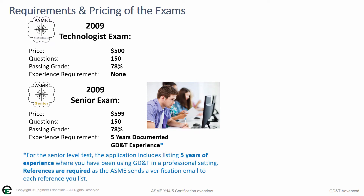For the senior level test, on the application you have to include 5 years of experience where you have been using GD&T in a professional setting. This means that references are required, as the ASME sends a verification email to every reference you list. When I signed up for the test, I had 3 different jobs in the past 5 years, so the ASME sent 3 verification emails to those references just to verify that I had been using GD&T. They really make sure that they check up on you.